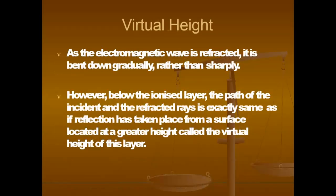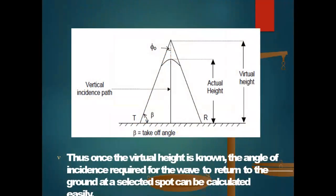The virtual height: as the electromagnetic wave is refracted, it is bent down gradually rather than sharply. However, below the ionized layer, the path of the incident and refracted rays is exactly the same as if reflection had taken place from a surface located at a greater height — called the virtual height of the layer. This diagram shows actual height versus virtual height. Once the virtual height is known, the angle of incidence required for the wave to return to the ground at a selected spot can be calculated easily.